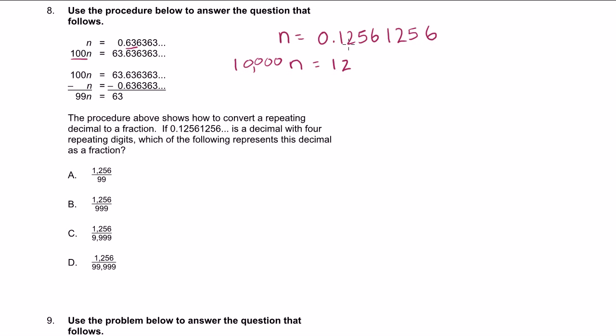So you get 1,256.1256. It just keeps repeating on and on and on. You get the idea. We just multiplied this by 10,000 because that allowed us to bring one whole repetition to the left of the decimal.